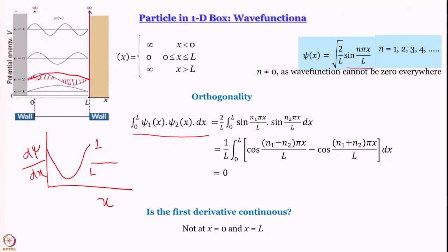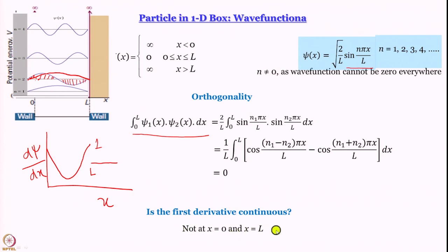We are discussing particle in a 1D box and have succeeded in learning about the wave functions of a quantum particle. The wave functions have turned out to be sine waves and only some are allowed. The wave function established is psi(x) = sqrt(2/L) * sin(nπx/L), where n = 1, 2, 3, 4... (positive integers). This set of wave functions has been normalized — that is how we got root 2/L — and we have established that they are orthogonal to each other. We also showed that the first derivative is not continuous at x = 0 and x = L, though that is not such a stringent condition on a wave function.